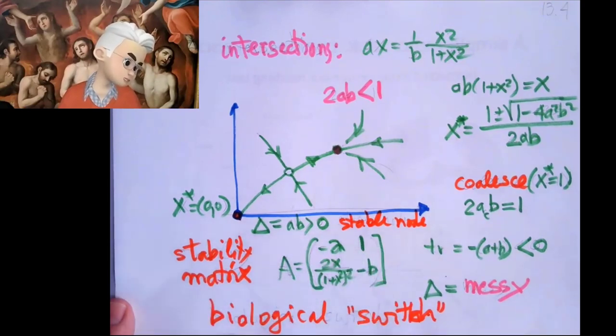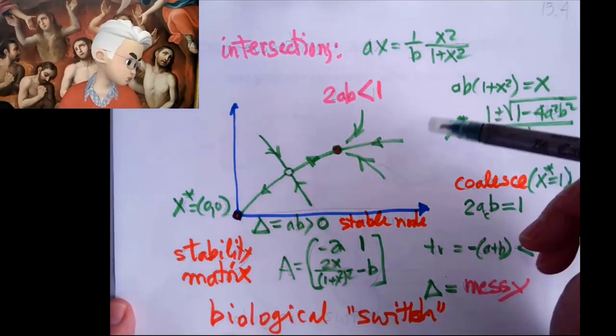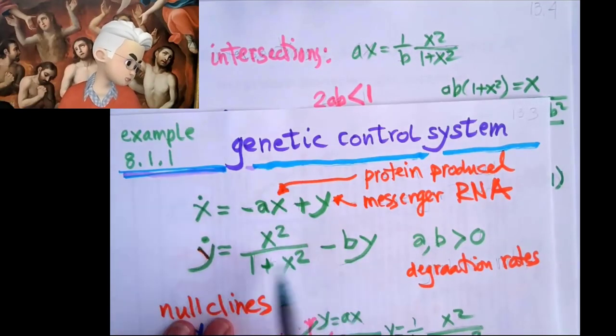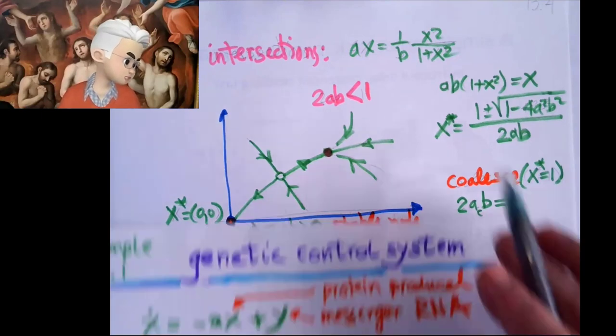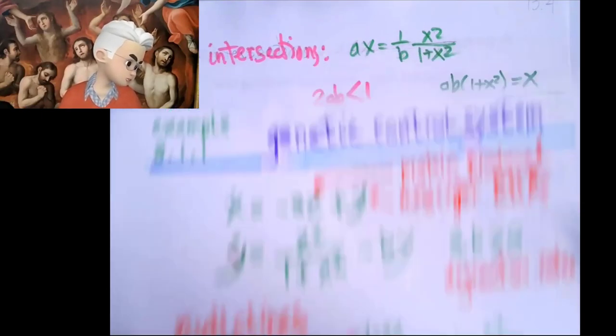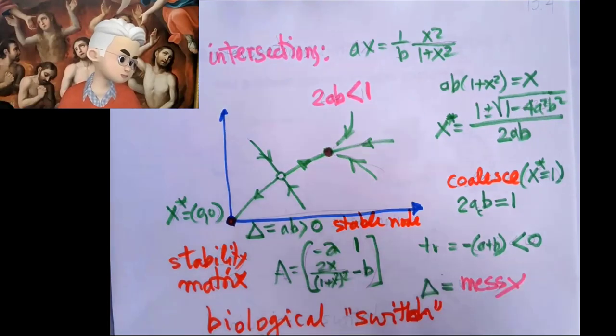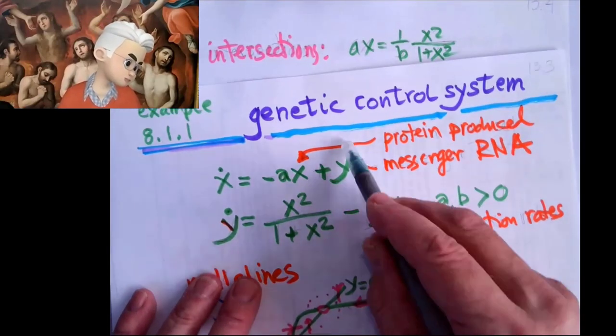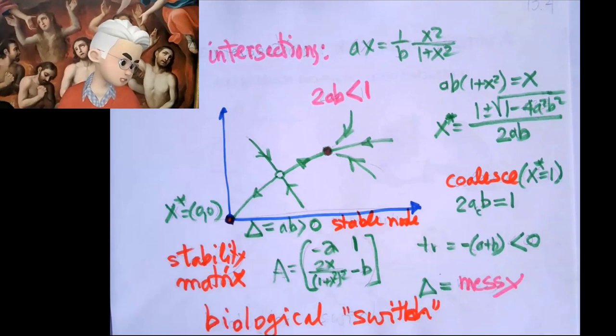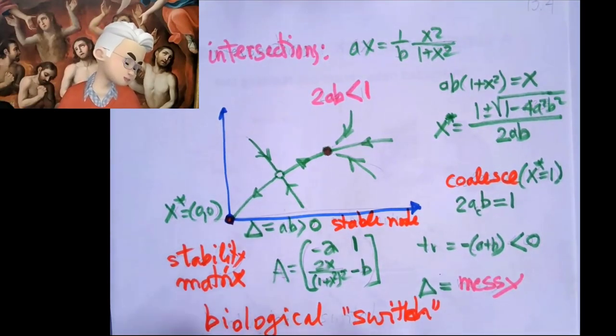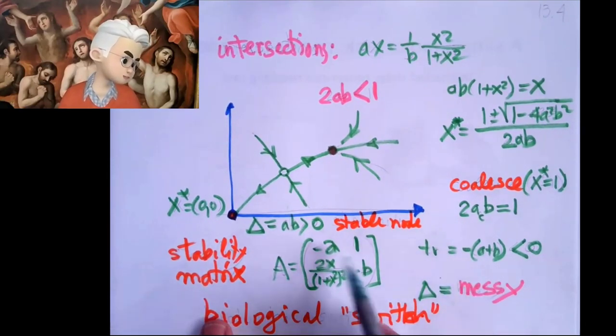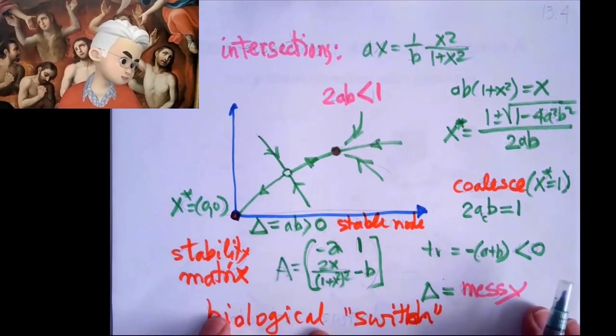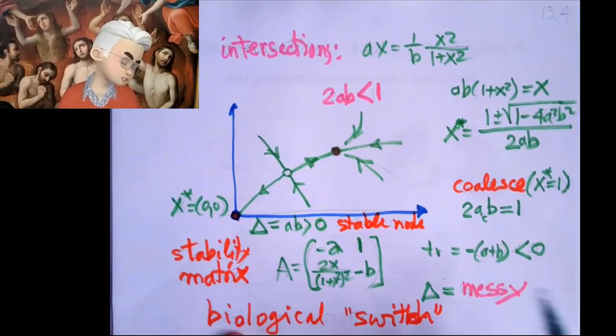You write your stability matrix, which is derivatives of x and y with respect to x and y. So for example, if I take the derivative of x, I get minus a. If I take the derivative of y, I get plus one. You fill it out. You find that the trace of this is always negative, because trace only depends on death rates of these guys.